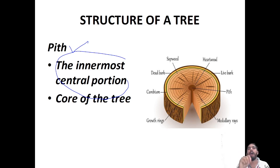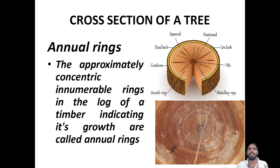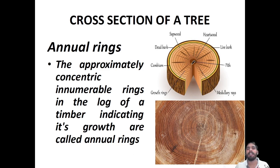For example: 'The innermost central portion of a tree is called — option A heartwood, option B pith, option C sapwood, option D cambium.' The right answer is pith. Pith is the innermost central part — it is the core of the tree. Next come the annual rings. The approximately concentric, innumerable rings in the cross-section of a timber indicating its growth are called annual rings.